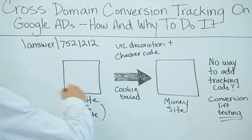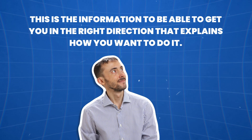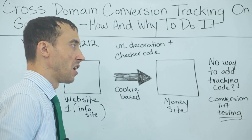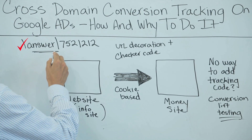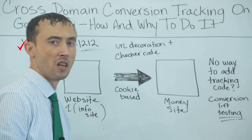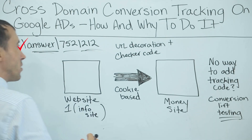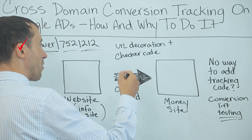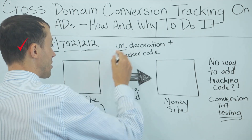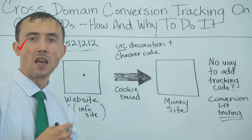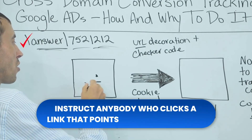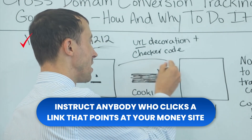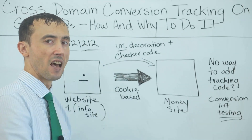I'm going to tell you briefly how this is done — this isn't a step-by-step tutorial, but information to get you in the right direction. If you want the step-by-step code to add to your website, I encourage you to Google answer/7521212 and you'll find Google's documentation on this process. At a high level: on the website you're initially driving traffic to, you'll have code that instructs anybody who clicks a link pointing to your money site to be 'decorated,' as Google calls it.